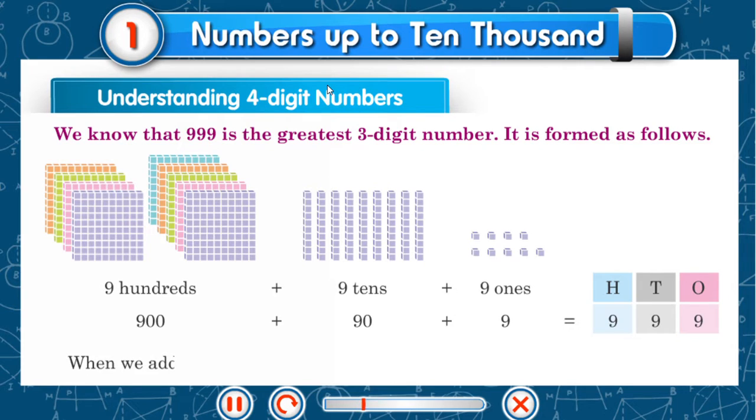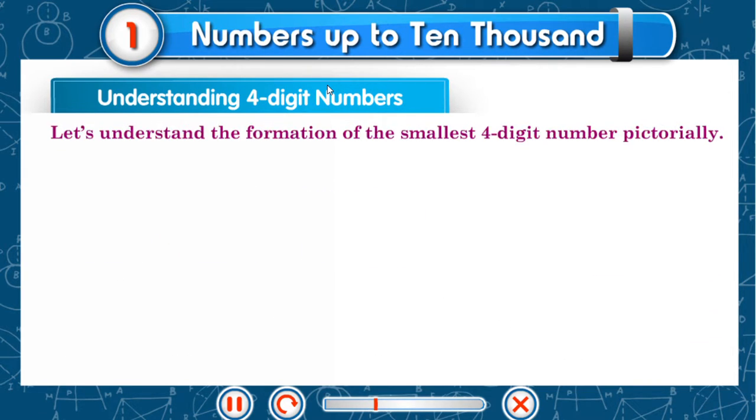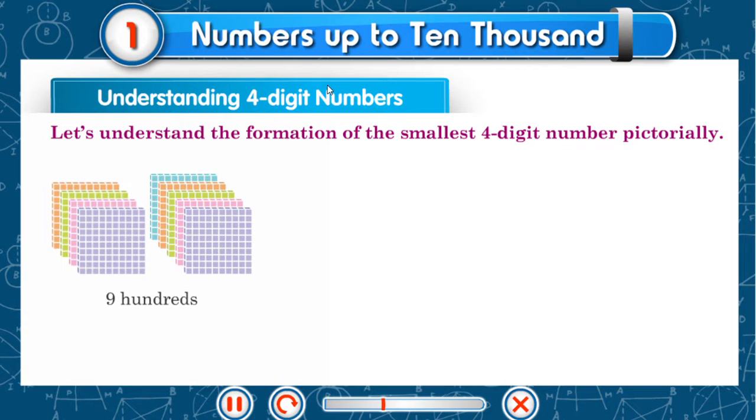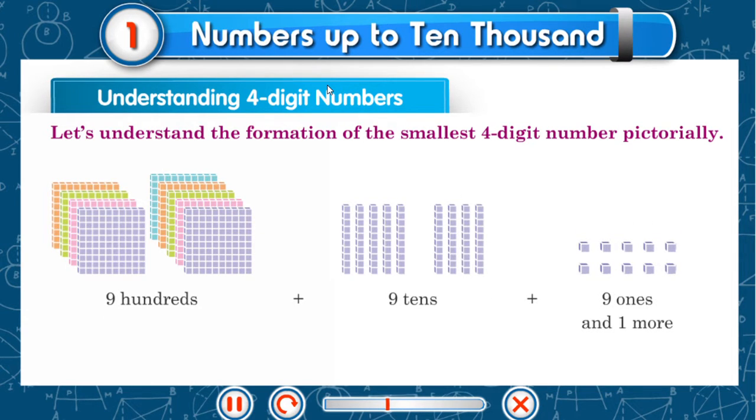When we add 1 to 999, it becomes 1,000, which is the smallest 4-digit number. Let's understand the formation of the smallest 4-digit number pictorially. 9 hundreds, 9 tens, 9 ones and one more.